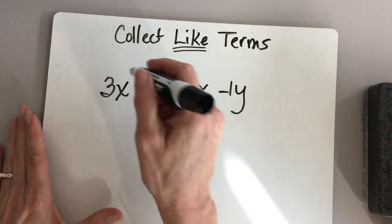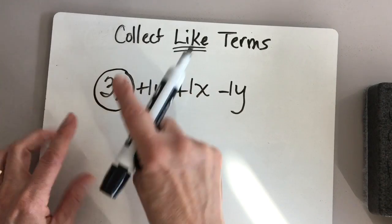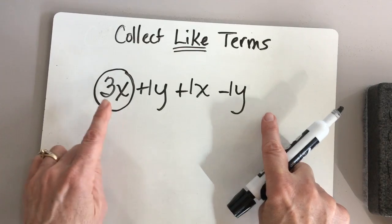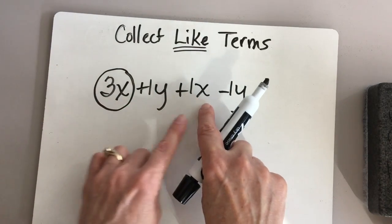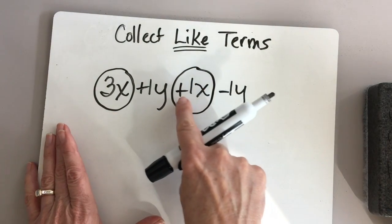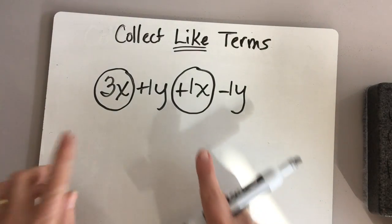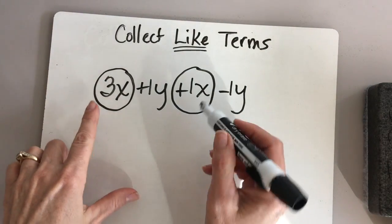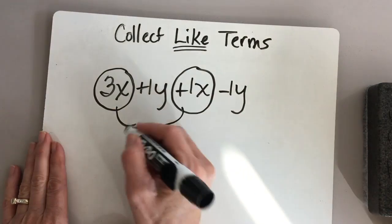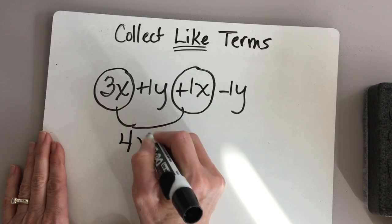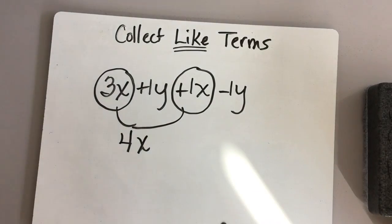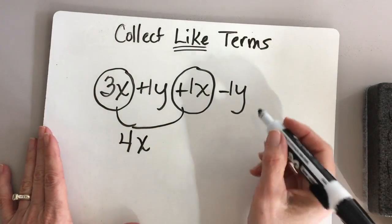Notice we have 3x here — I'll circle that and look through my expression to see if I see any other x's. There's a y, and there's an x — this is a like term, so I'll circle it, including the operation sign in front of it. We can collect those. If you have 3x's and you add another x, 3 plus 1 is 4 — so 4x. 3x plus 1x combined gives you 4x.